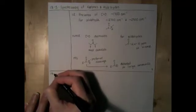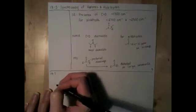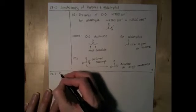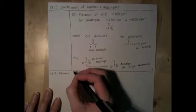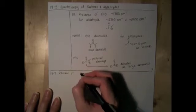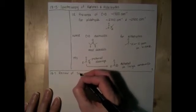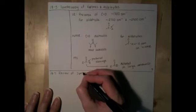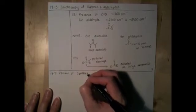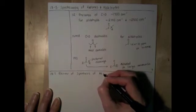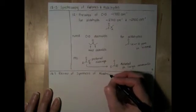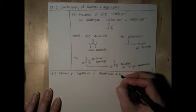Next thing that we're going to do is review some of the reactions that we've already seen that produce aldehydes and ketones. Section 18.7 is called Review of Synthesis of Aldehydes and Ketones.